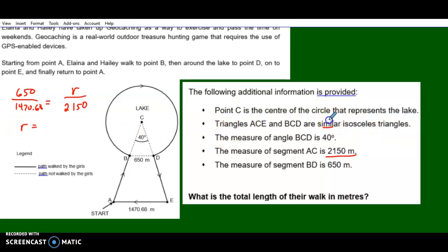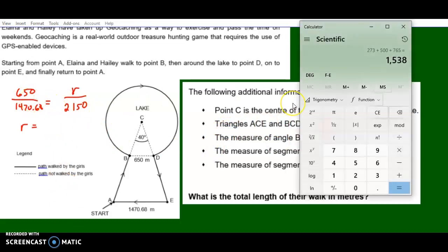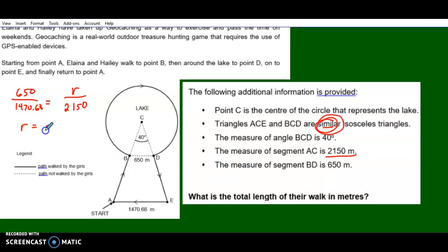That's how I find the radius using similar triangles. I can write a proportion. So the radius is going to be 650 times 2150 divided by 1470.68, equals 950.24 meters.